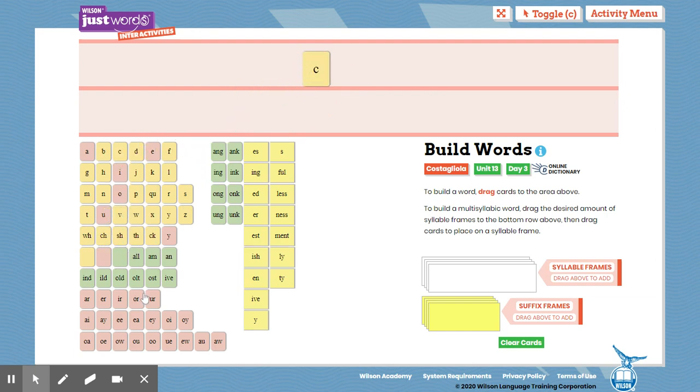The next word. S, OU, C, H. Let's tap it out. C, ow, ch, couch. The word is couch. Spell it away. C, OU, C, H. The next word.